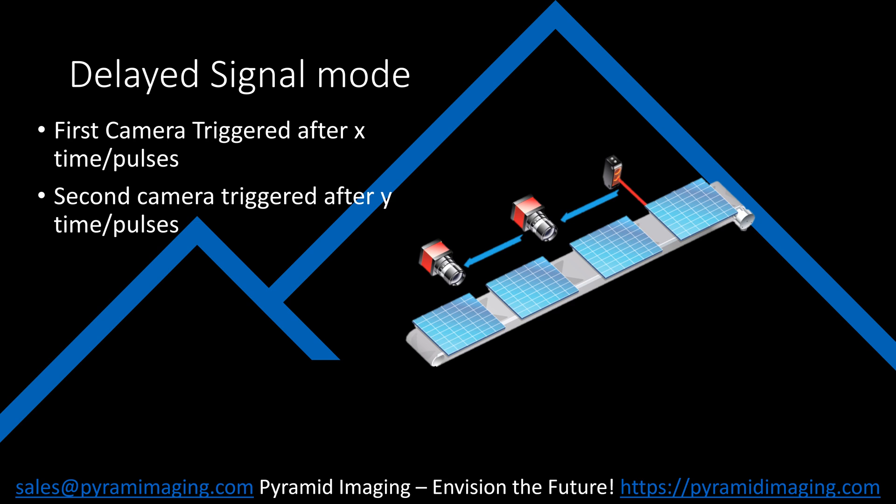It can also be helpful when multiple triggers must be sent after the respective periods of time. This scenario is similar to the one before, except we now have more cameras further down the conveyor, which must be triggered when the product is in front of them. This mode can also be set with encoder counts in the case of a variable speed conveyor.